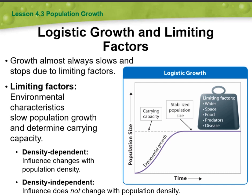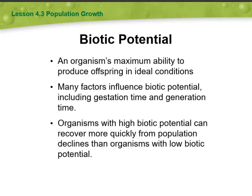Then we're going to move to talk about biotic potential. Biotic potential refers to the maximum reproductive capacity of a population under ideal conditions. Several factors contribute to an organism's biotic potential. These factors include the age at which individuals can reproduce, the number of offspring produced per reproductive event, the frequency of reproductive events, and the survival rate of the offspring to reproductive age. Basically, it's all about how efficiently an organism can reproduce.